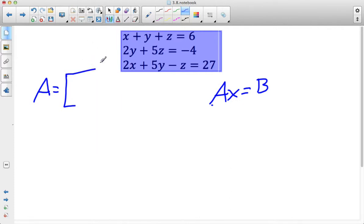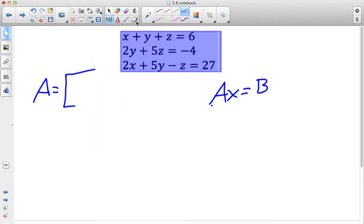Okay, so the first line I have coefficients of 1, 1, and 1, so that's going to be my first row for my matrix. My second row, I don't have an X, so I have zero X's, two Y's, and five Z's.